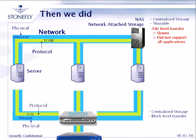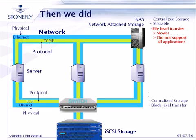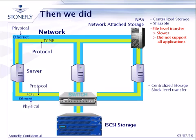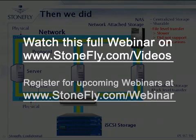So what happened was iSCSI was introduced. The idea was that we already have this network infrastructure — the cabling and the physical network, Ethernet. So why not just use Ethernet and connect to the storage? That's where iSCSI started. Basically the physical interface is Ethernet, standard Ethernet, and the protocol is SCSI. So iSCSI is basically SCSI over Ethernet.